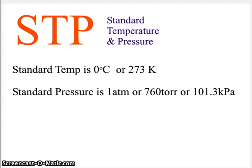When we speak of pressure and temperature in gas laws, we always use a basic standard. As we discussed with the mole — one mole equals 22.4 liters at STP, standard temperature and pressure. Standard temperature is zero degrees Celsius, converted to Kelvin as 273 K. Standard pressure is one atmosphere, equal to 760 Torricelli's, which converts to 101.3 kilopascals. This will be our standard temperature and pressure as we work through the gas laws.